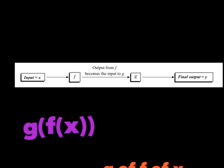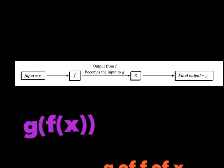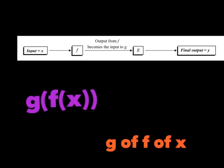Now here's the notation we're going to use. Let's be very careful how we copy this down, and then we'll put it into English. You see the g, the parenthesis, the f, the parenthesis x. Here's how we read this in mathematical lingo — make sure we get this copied down correctly. This reads g of f of x.